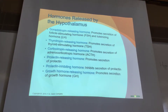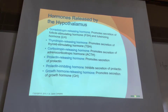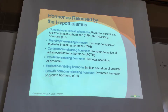For example: the hypothalamus releases thyrotropin-releasing hormone, which stimulates the anterior pituitary to release thyrotropin—also known as thyroid-stimulating hormone (TSH). TSH then acts on the target gland, the thyroid. The thyroid releases its specific thyroid hormone out to target organs like bones, muscles, or the pancreas.